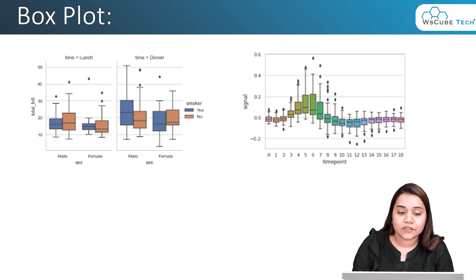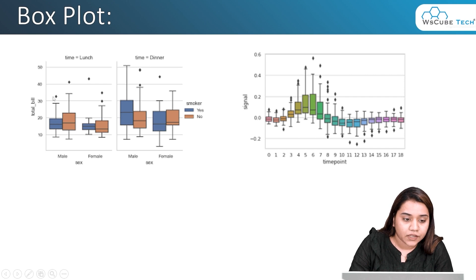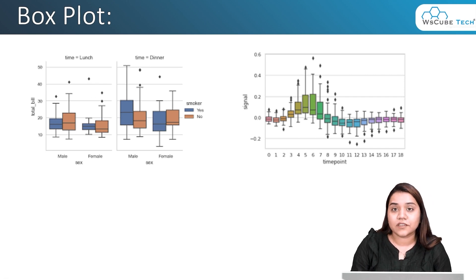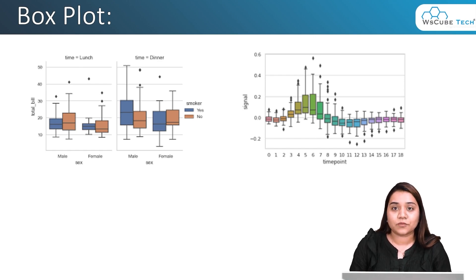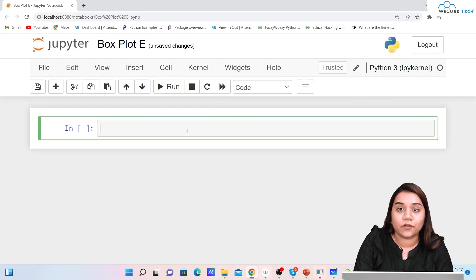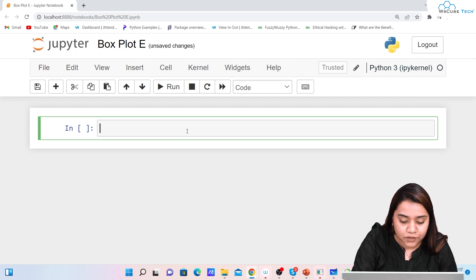First of all let's have a look at how a box plot looks like. On the left hand side you can see we have some boxes and some outliers. We will also learn how to read a box plot and work with an example, then we will create a box plot using Seaborn.